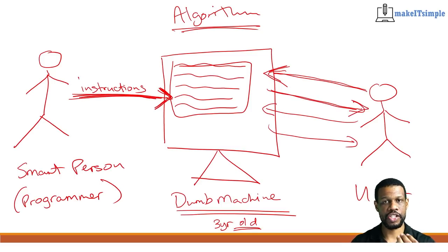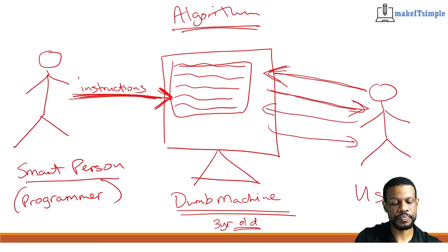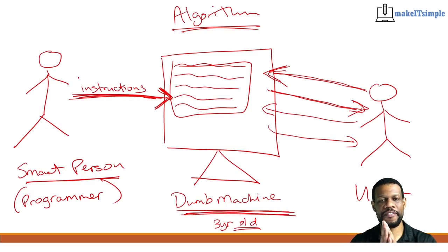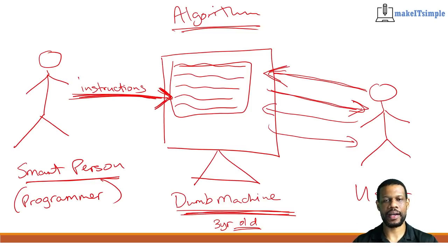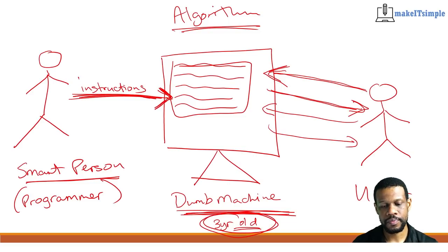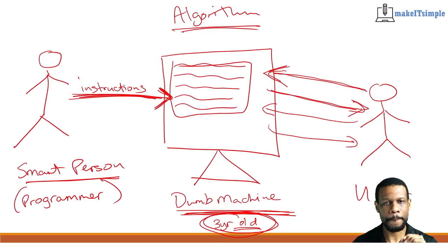You are the smart person, the programmer. The dumb machine is the three-year-old child, and you have to give very specific instructions: child, take this bowl and carry it to table number seven, put it on the table and then come back. Take this plate with this sandwich and carry it to table number 13, put it on top and come back. Every instruction you give is making sure the three-year-old can't mess it up — that's the whole point of algorithms. You are giving instructions that the computer cannot mess up.